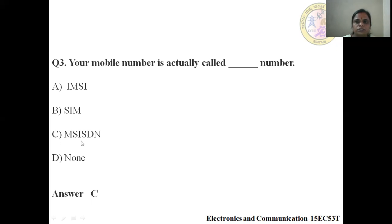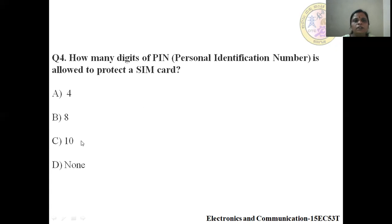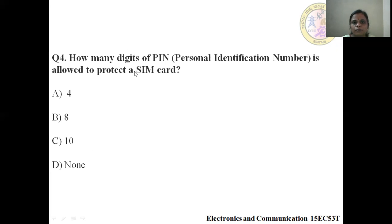A mobile terminal is actually called by what number? Option A: IMSI, Option B: SIM, Option C: MS-ISDN, Option D: None. The answer is MS-ISDN. How many digits of PIN (Personal Identification Number) is allowed to protect a SIM card? Option A: 4, Option B: 8, Option C: 10, Option D: 9.